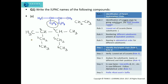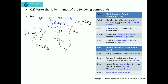The second step: we need to verify the lowest set of locants as per Rule 3. I will write the set of locants for the numbering starting from the left-hand side towards the right-hand side. In this case, the substituents are present at the third as well as the fourth position, so the lowest set of locants will be 3 and 4.